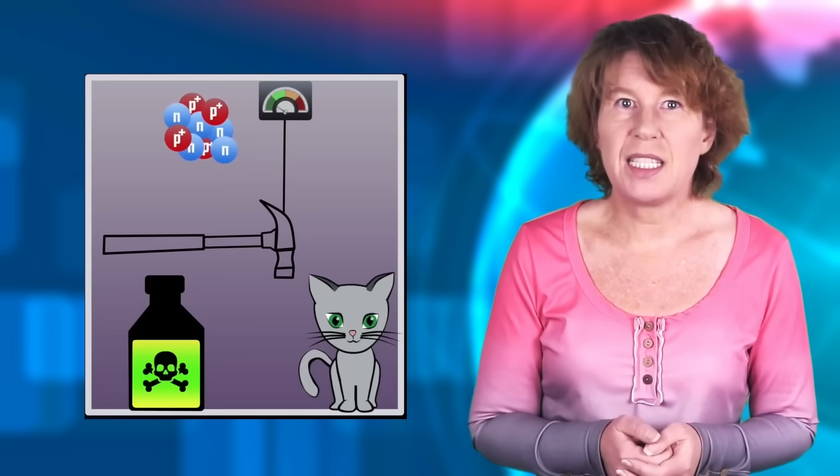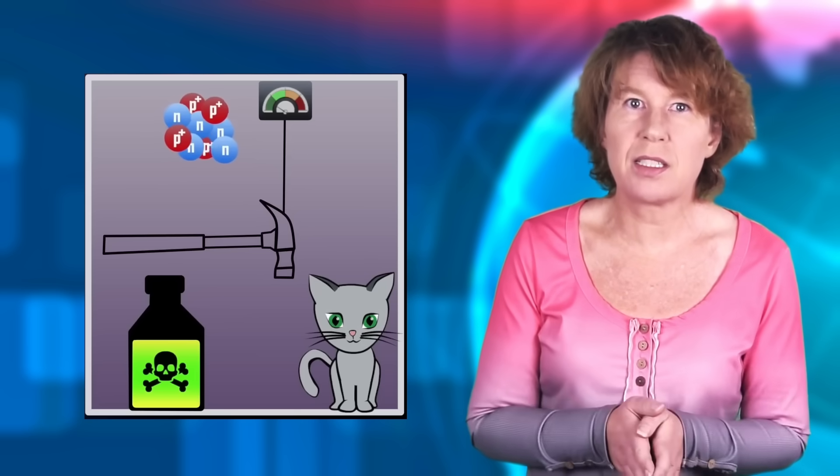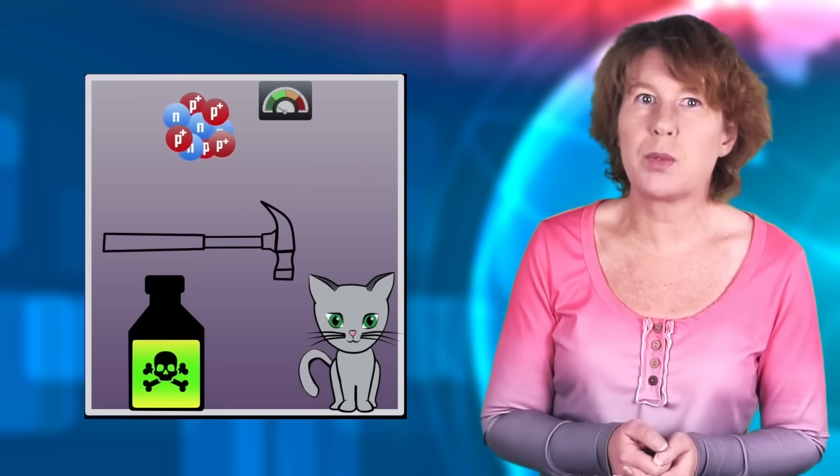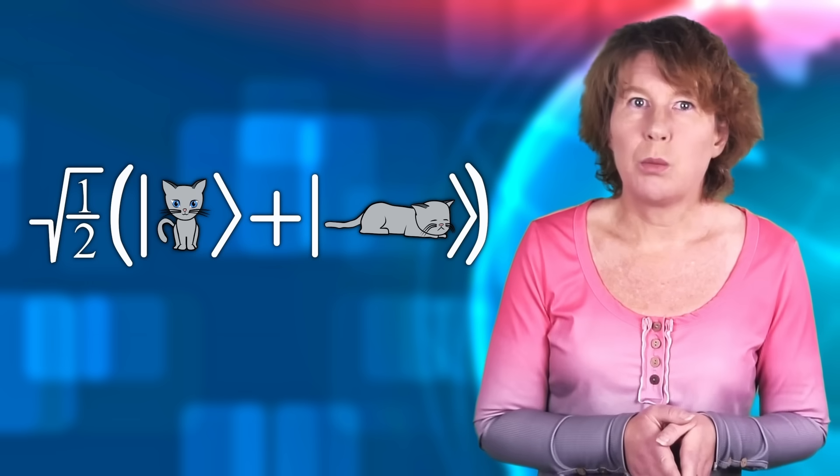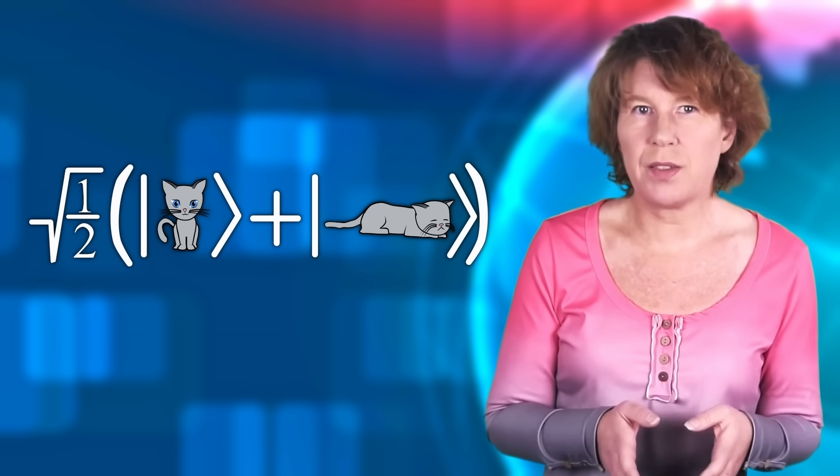He said let's suppose we have an atom that's in a superposition of decayed and not decayed. If it's decayed, then that triggers the release of some toxic substance, which kills a cat. So now the cat must be both dead and alive. But why do we never observe this?